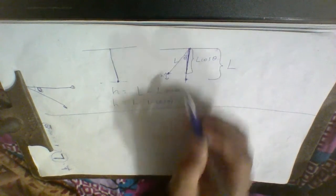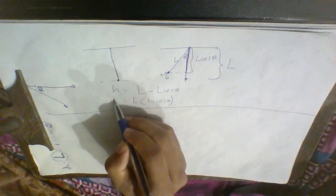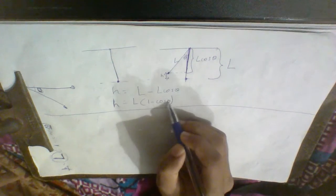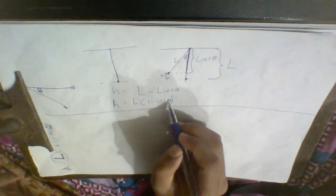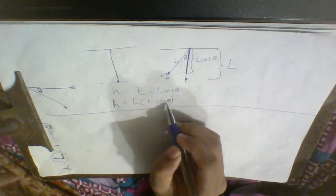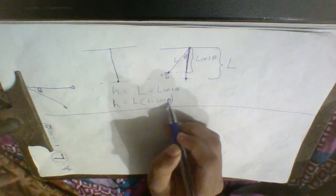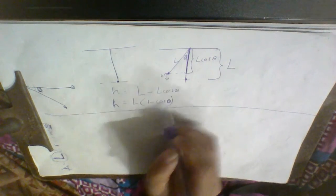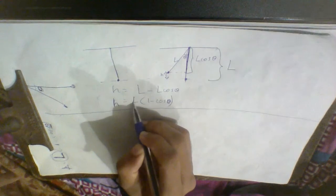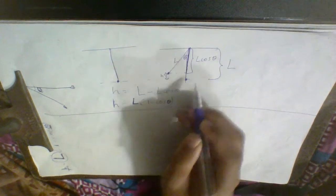You will write it as 1-cosθ. For theta, you can write it in terms of height. 1-cosθ, then theta equals height. The length is equal to height.